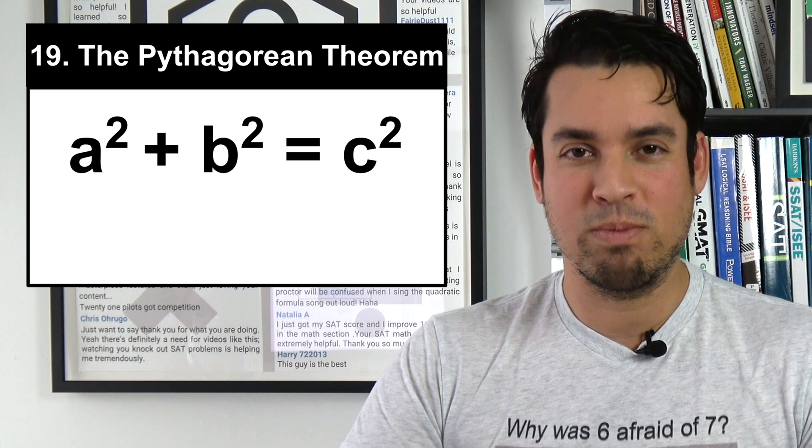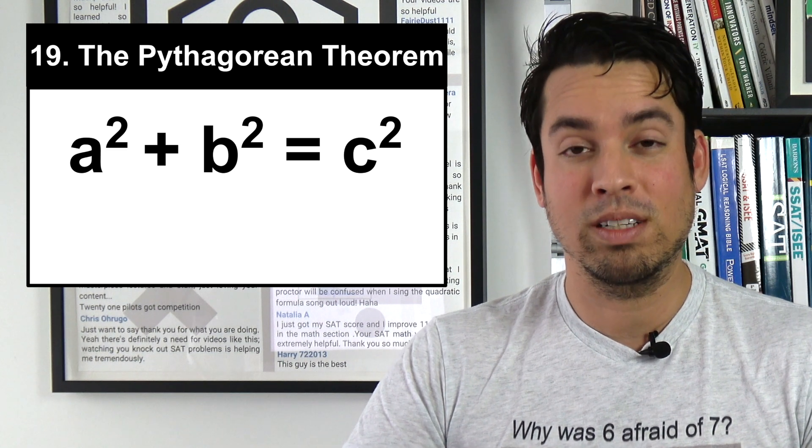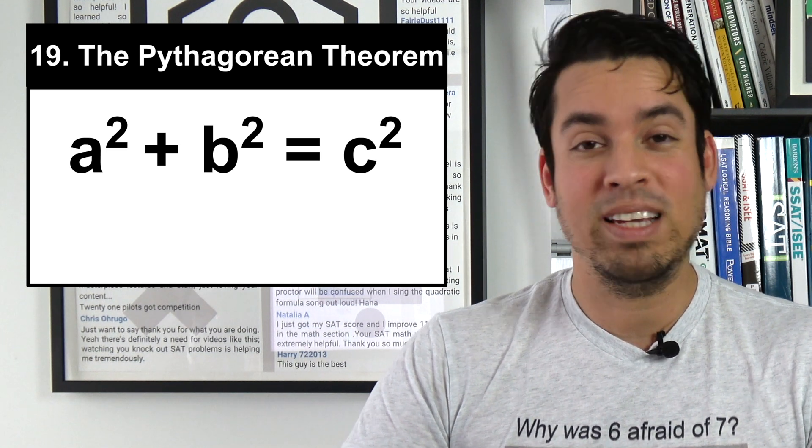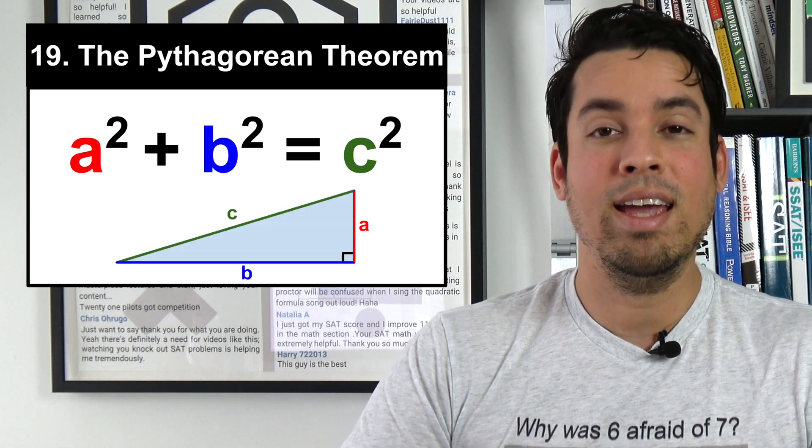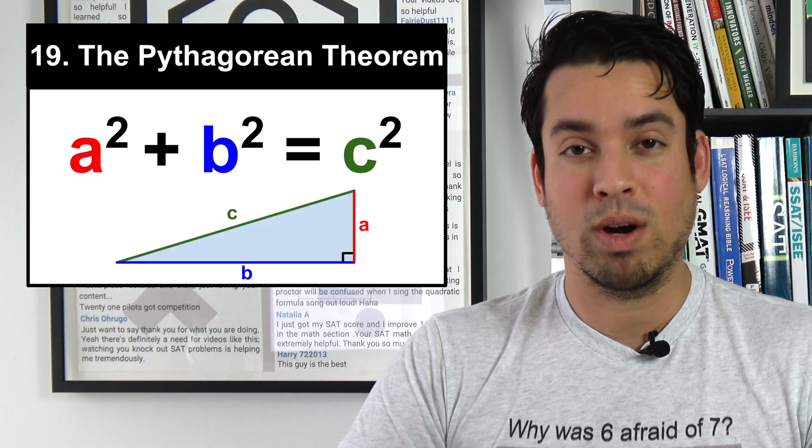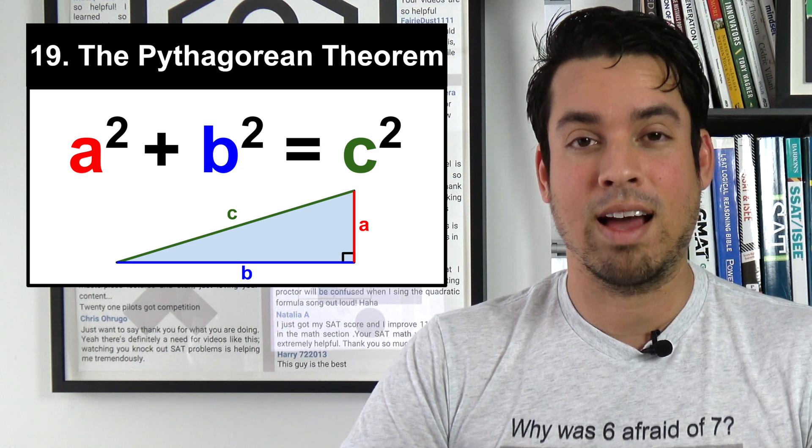Number 19 is an oldie but a goodie, one of the most important formulas in geometry: Pythagorean's theorem. Pythagorean's theorem is simply a² plus b² equals c², where a and b are the legs of a right triangle and c is the hypotenuse.